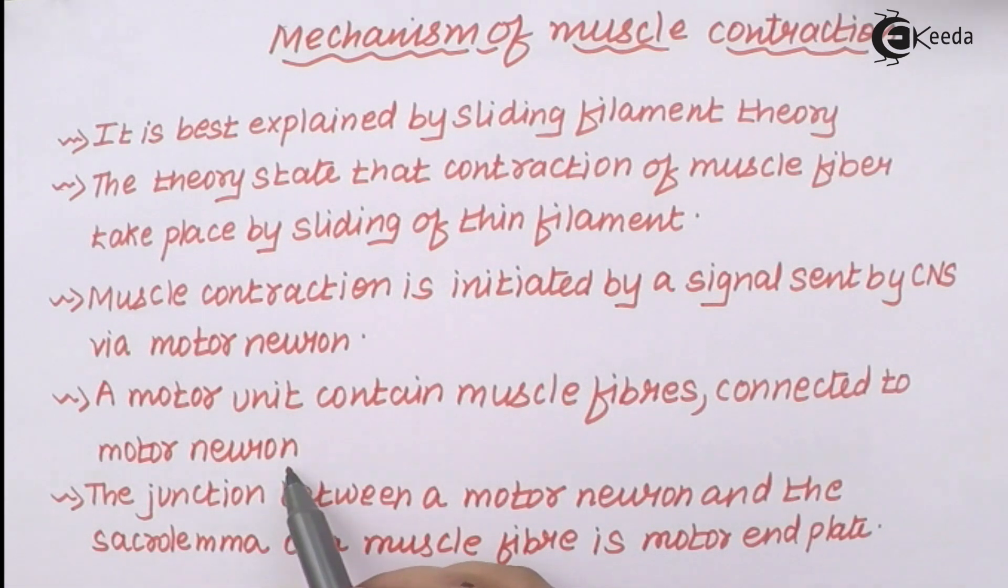Now the motor neuron is nothing but a chain of neurons that will ultimately traverse or carry that signal or impulse. A junction or you can say a midpoint between a motor neuron and the sarcolemma fiber of muscle is basically termed as motor end plate. And this motor end plate is the junction at which information has been transferred or is being transferred.